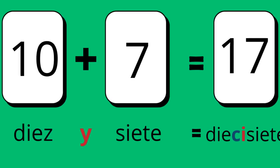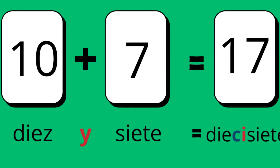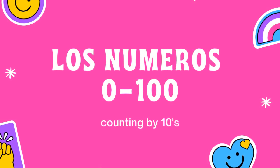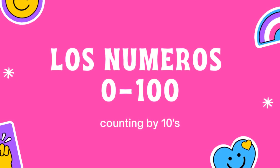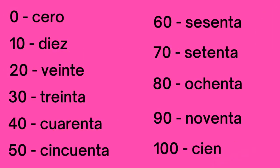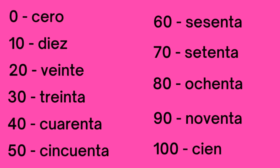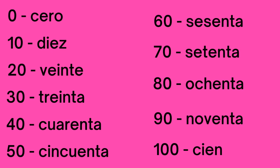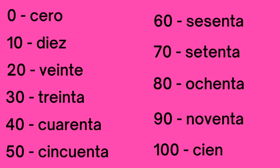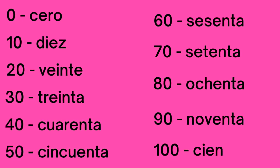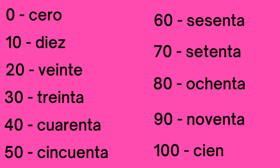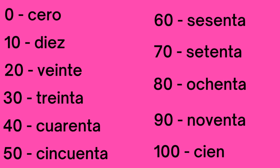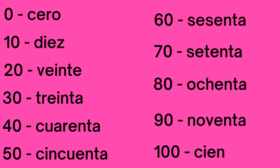Now this can be done with any number greater than 16. You can count all the way to a thousand as long as you follow this pattern. But first, we do need to learn how to count by tens with the números cero al cien. We're going to count by tens. Repeat after me. Cero, diez, veinte, treinta, cuarenta, cincuenta, sesenta, setenta, ochenta, noventa, cien.